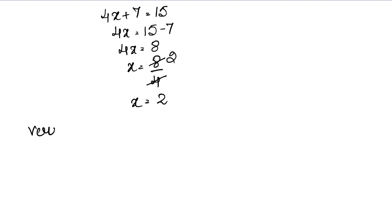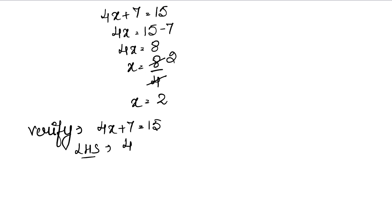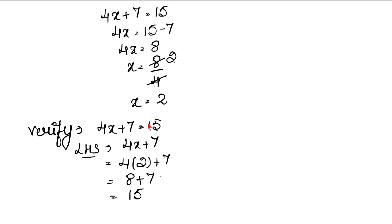Now we have to verify that the value of x equals 2 is correct or not. We write our equation. Left hand side is 4x plus 7. The value of x is 2, so it becomes 4 times 2 plus 7, which is 8 plus 7, which equals 15. Our left hand side equals 15 and our right hand side is also 15. So we can say left hand side is equal to right hand side.